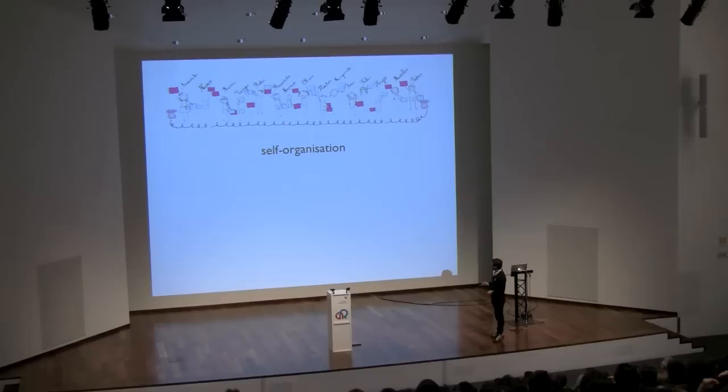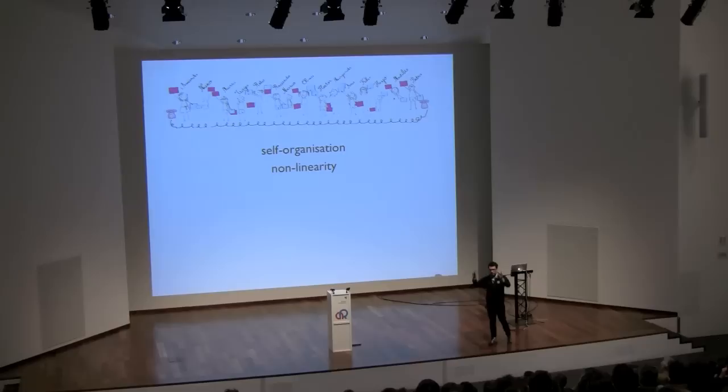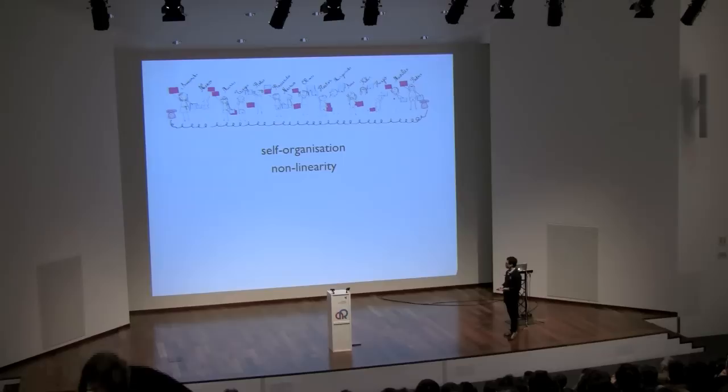We also have the issue of non-linearity. If I give you an arrangement of kids after, say, 10 turns of the game and tell you to work backwards how these kids ended up in this arrangement, you won't be able to do it — because there are actually many, many histories that could lead to that pattern emerging. This means that we cannot reverse-engineer the system or break it down into parts, because the interactions form non-linear patterns that we cannot undo afterwards.